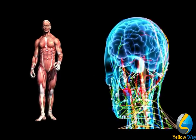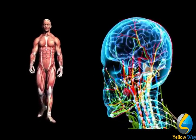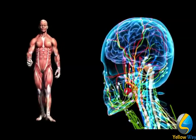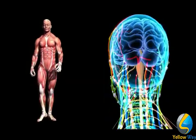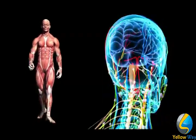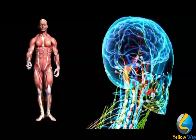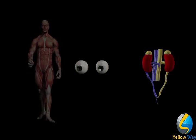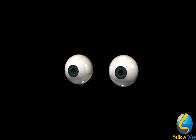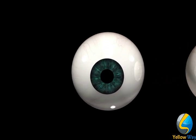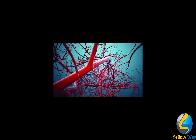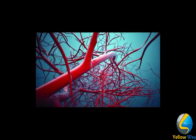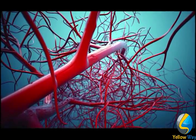Diabetes is a systemic condition that affects many parts of the body. One of the first areas that diabetes affects is the kidneys and the eyes. However, changes can be seen in the eyes but not for the kidneys. Diabetes affects these organs first due to their small microvascular system.